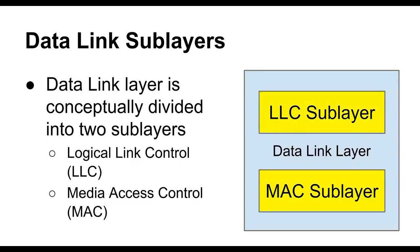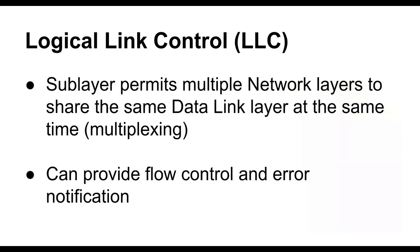We can break the data link layer conceptually into two sub-layers: the Logical Link Control (LLC) sub-layer and the Media Access Control (MAC) sub-layer. The LLC sub-layer allows multiple different network layers to share the same data link layer at the same time — it performs multiplexing, allowing different network layer technologies to be used simultaneously over the same link. The LLC layer can also optionally provide flow control, error correction, and message acknowledgement features.